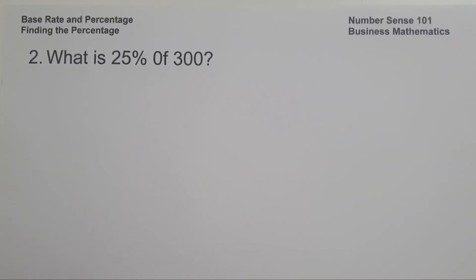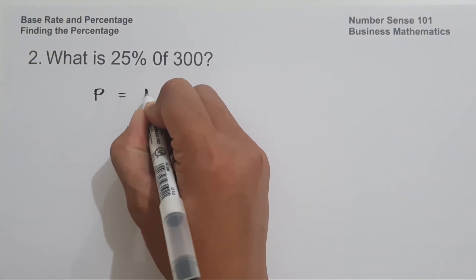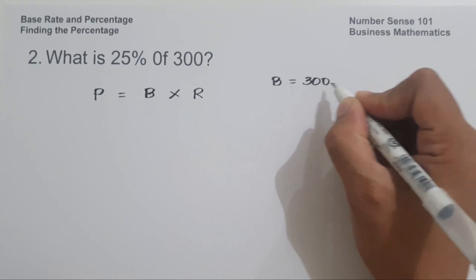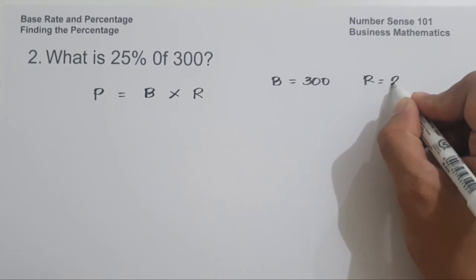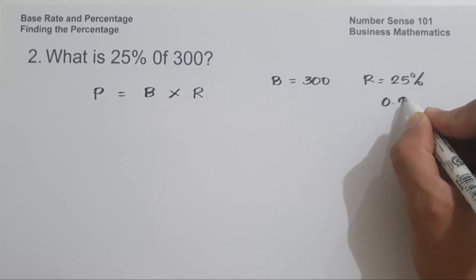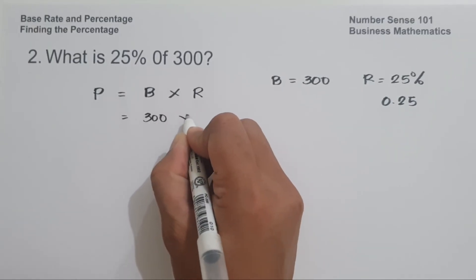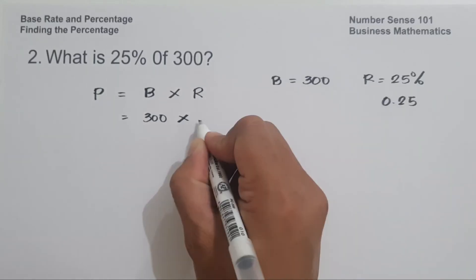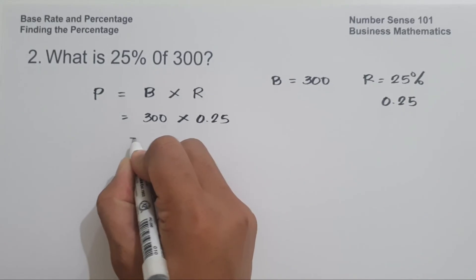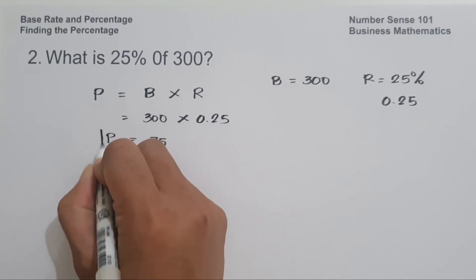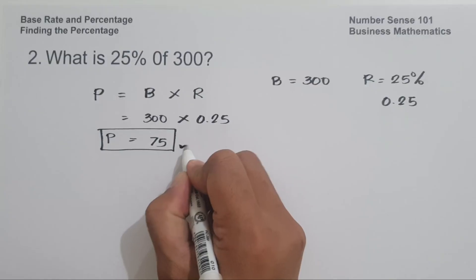On example number two: What is 25% of 300? Using the formula percentage equals base times rate, our base is 300 and our rate is 25% or 0.25 in decimal. So 300 multiplied by 0.25 gives us 75. That means 75 is 25% of 300.